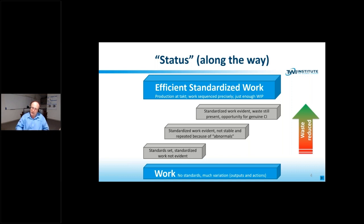The fifth point of status is the blue box up the top, where we have very efficient standardised work, which means production at takt, work sequenced precisely and just enough WIP. An interesting point to note that as we move up through these points of status, the waste will be being reduced. From what we understood during the week at Toyota with Mr. Kato, reduction of waste is a by-product of moving through these points of status.